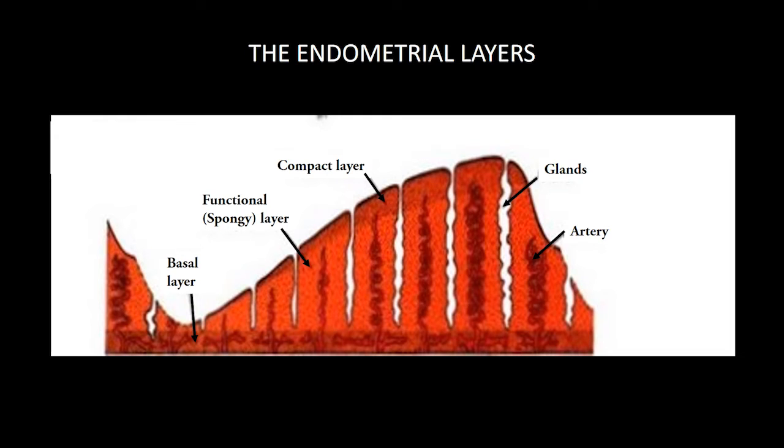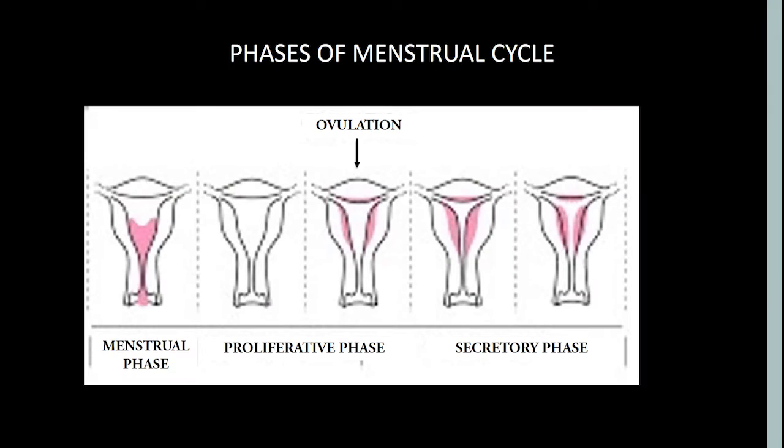This ciliated epithelium covers the functional layer and dips to line the glands. During menstrual cycle, it is this endometrium that is affected. The functional layer is always sloughed off along with the compact layer, whereas the basal layer is never affected. Menstrual cycle involves three phases: the menstrual phase, the proliferative phase, and the secretory phase.